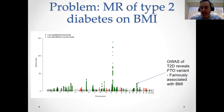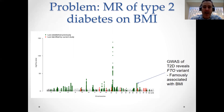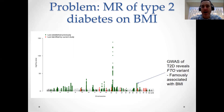But there's a complication here. Because if you look at that GWAS of type 2 diabetes, there are variants in it — like at the FTO locus — that are actually associated with BMI. And it's through their relationship with BMI that they're then associated with type 2 diabetes. So BMI is mediating the relationship between variants at the FTO locus and type 2 diabetes risk.